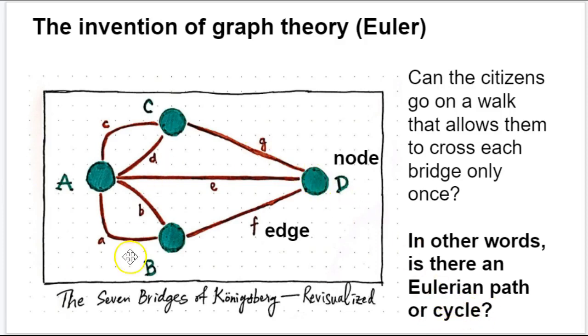So Euler, in drawing this, was able to simplify the problem and figure out that the solution is negative. In other words, no, you cannot do a walk that crosses each of these edges only once. It's just not possible. So he proved that the answer is no. He solved the problem, even if it was in the negative, and he invented early graph theory. He didn't use the term Eulerian path or cycle, but it got used later in his honor.